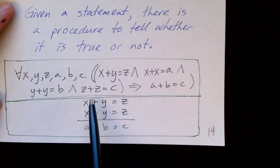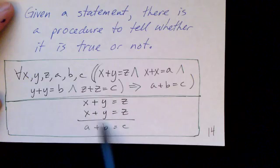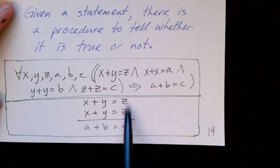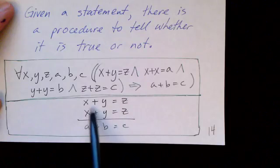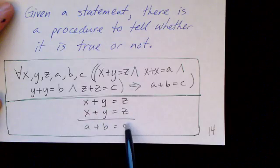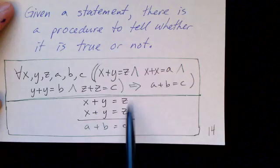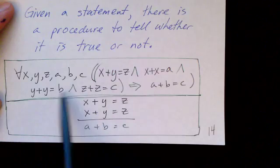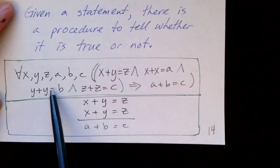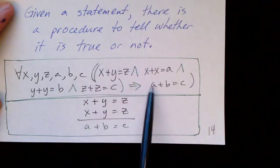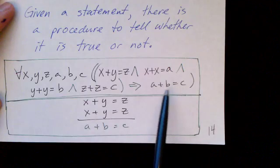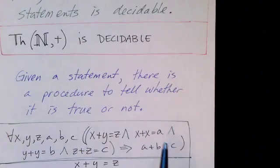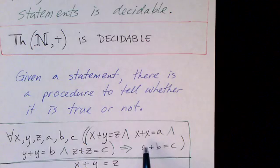And this sort of hints at how we might have a procedure to verify that this statement is true. We can actually use algebra to sort of conclude that if these things—this and this and this and this—are true, we can show that this must be true. So there is a procedure to tell whether a statement like this is true or false, and the set of true statements is decidable.